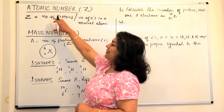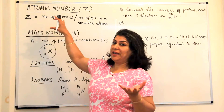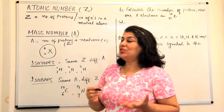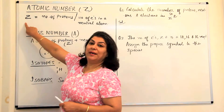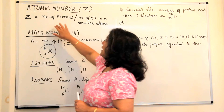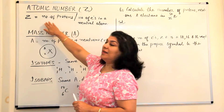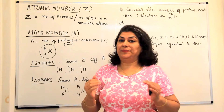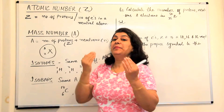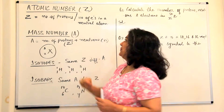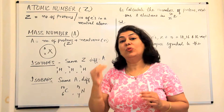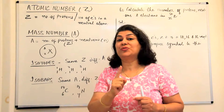The first thing that we know about an atom or an element is its atomic number. The atomic number is represented by the letter Z, capital Z. It means the number of protons in an atom. The number of protons tells you which element it is.